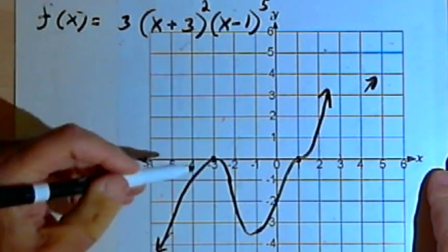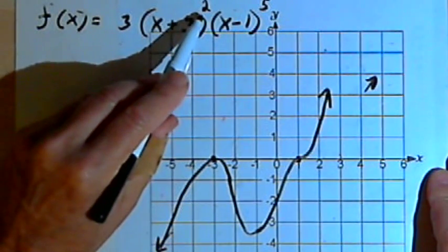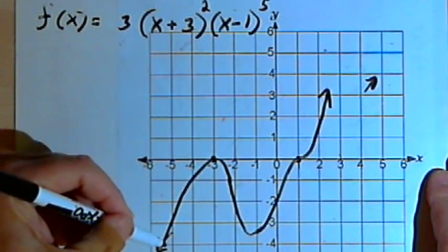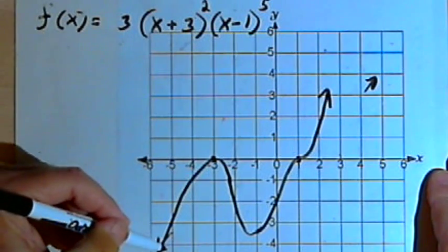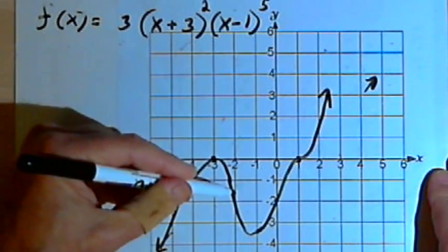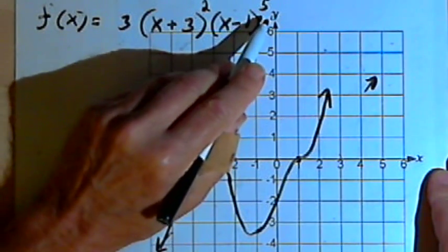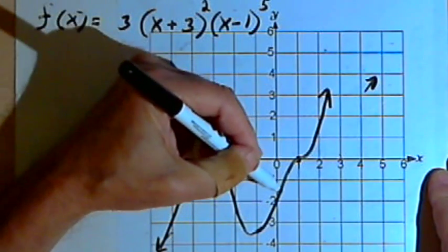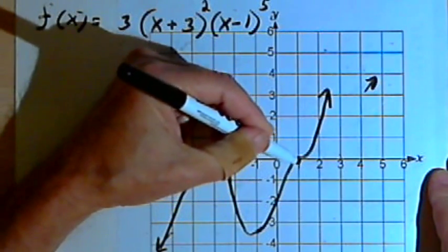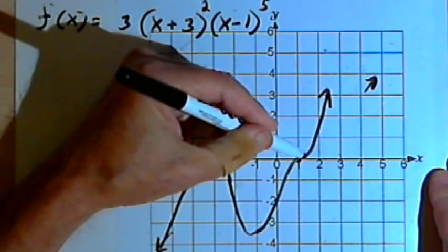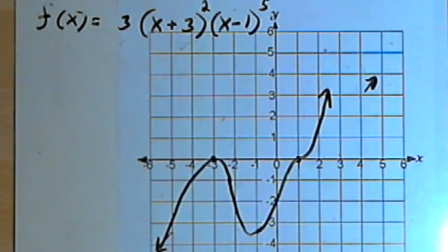So the bottom line is this. If you have an even multiplicity, instead of going through the x-axis, the graph is going to turn around when it gets to it. If you have an odd multiplicity, it will go through the x-axis, but it will form a curve at that axis. And that's about it. Take care. I'll see you next time.